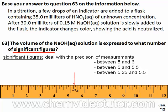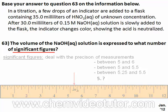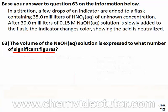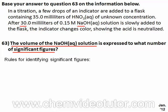Basically, we are certain about a part of the measurement, but estimating on the rest. So we have rules for identifying significant figures for any kind of measurement, including the volume of the NaOH solution, which is 30 milliliters, or 30 mL for short.